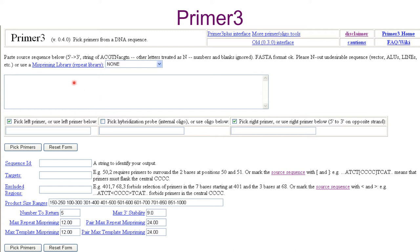From the database we have to copy that sequence and paste it in this box. Then below this box there will be an option like whether you want to pick the left primer or pick the hybridization probe or pick a right primer. We have to click that.